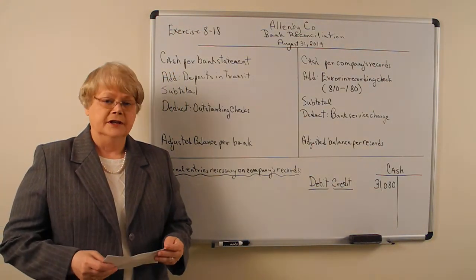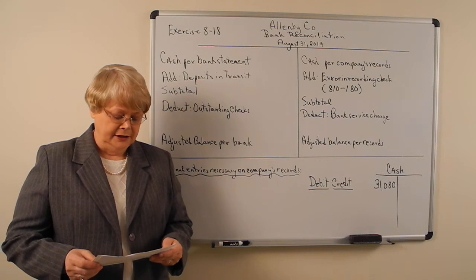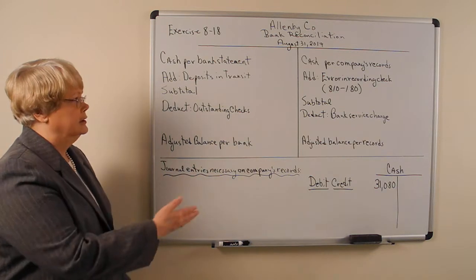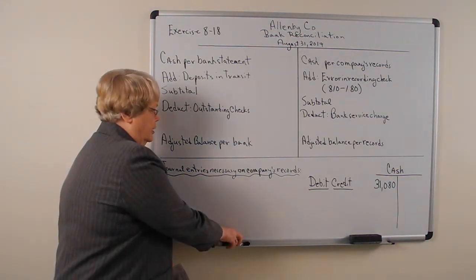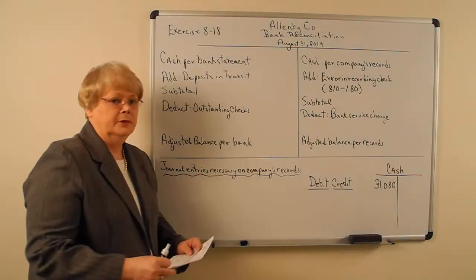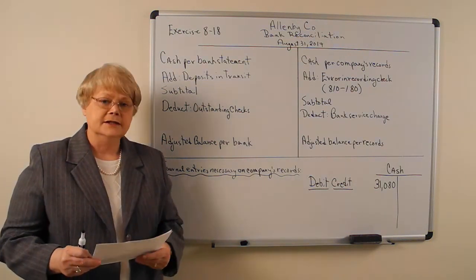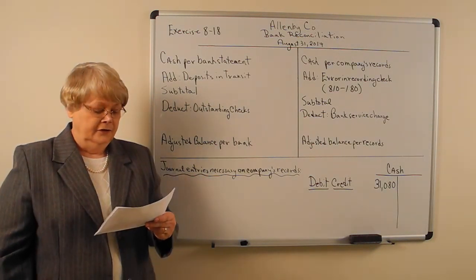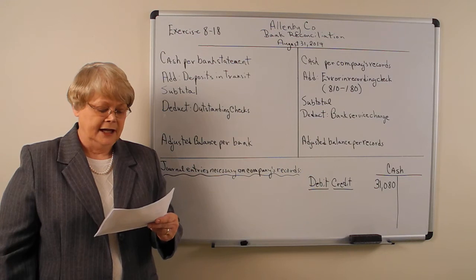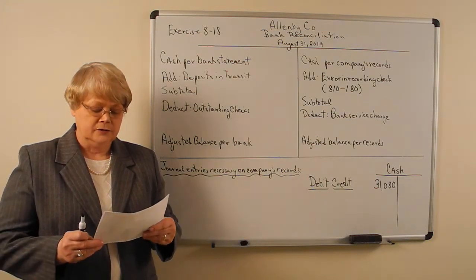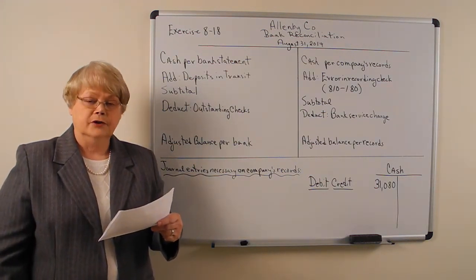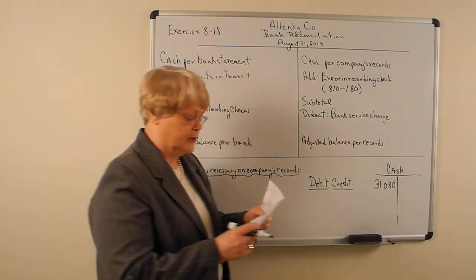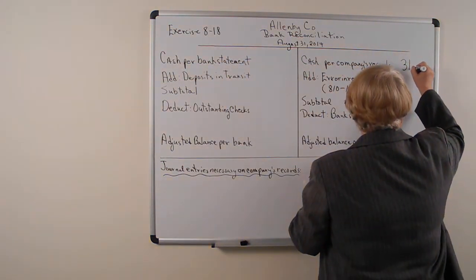To illustrate this, I'm going to look at exercise 8-18 in your textbook. I've already put the format of the reconciliation up here so we have a starting point. The first thing the exercise says is the cash balance according to the company's records at August 31st is $31,080. So I'm going to put that over here — cash per company's records, $31,080.